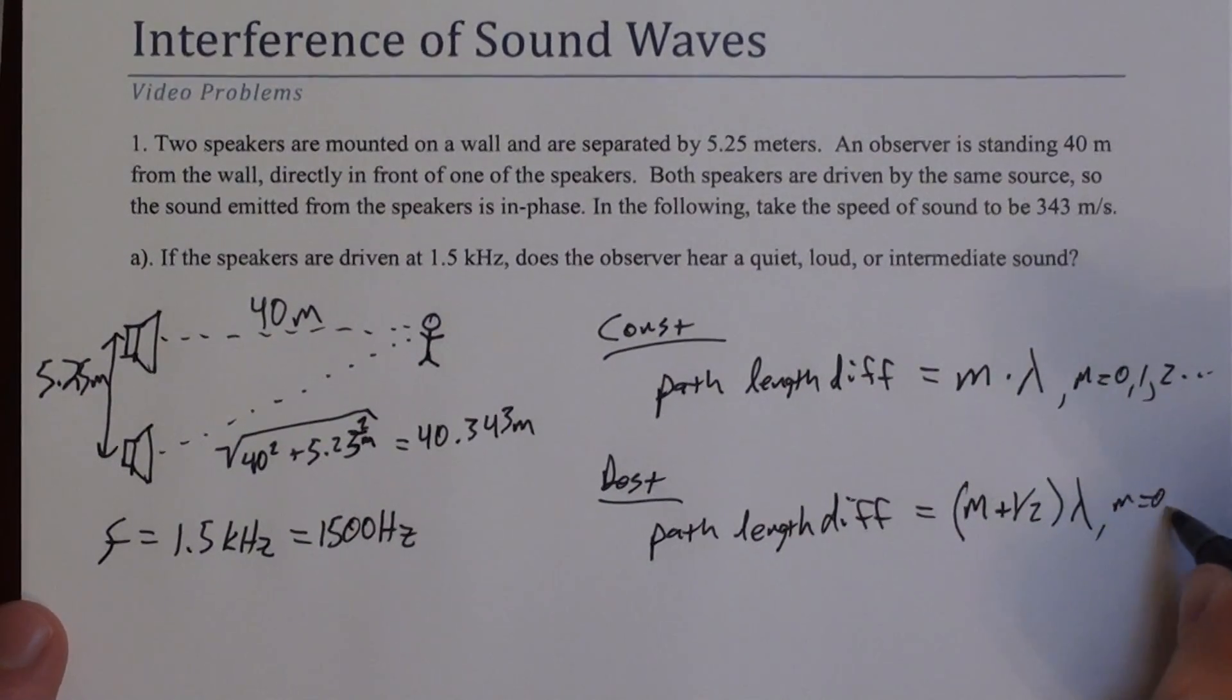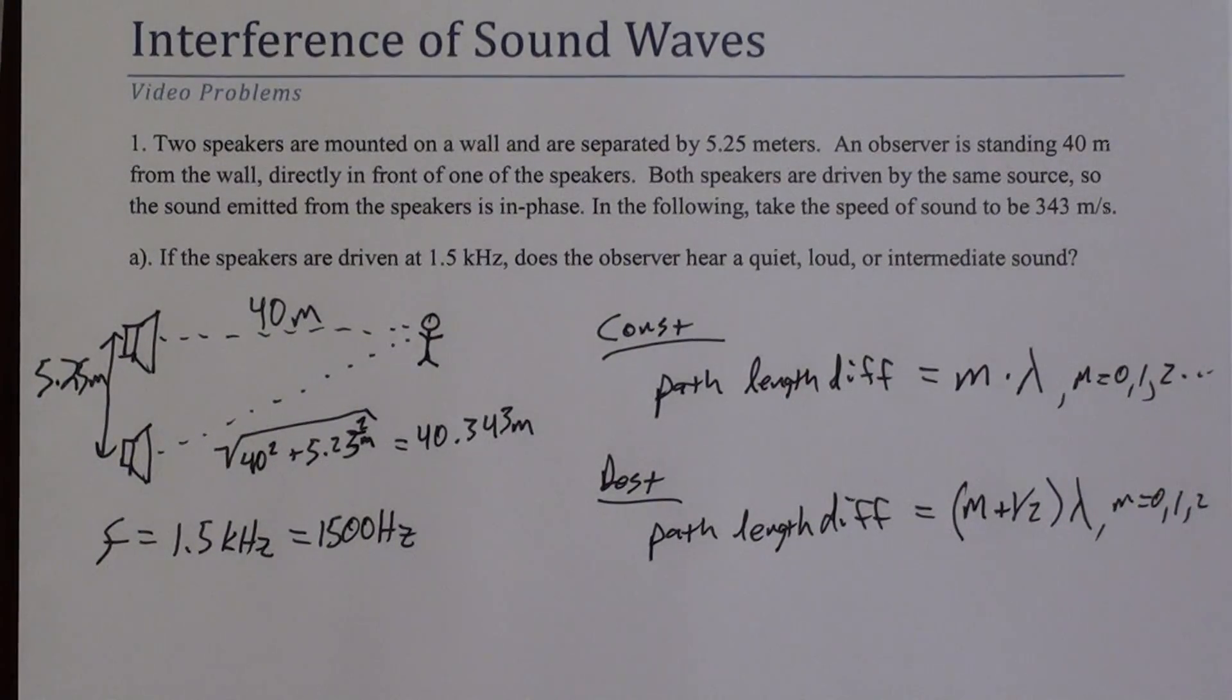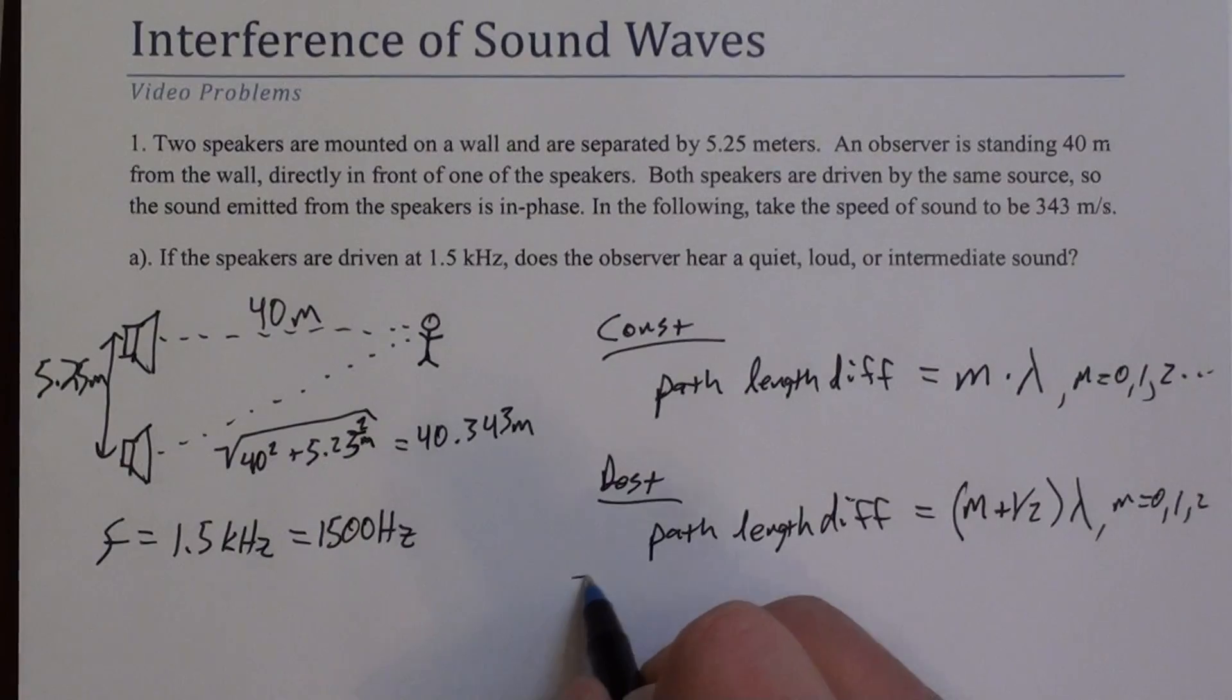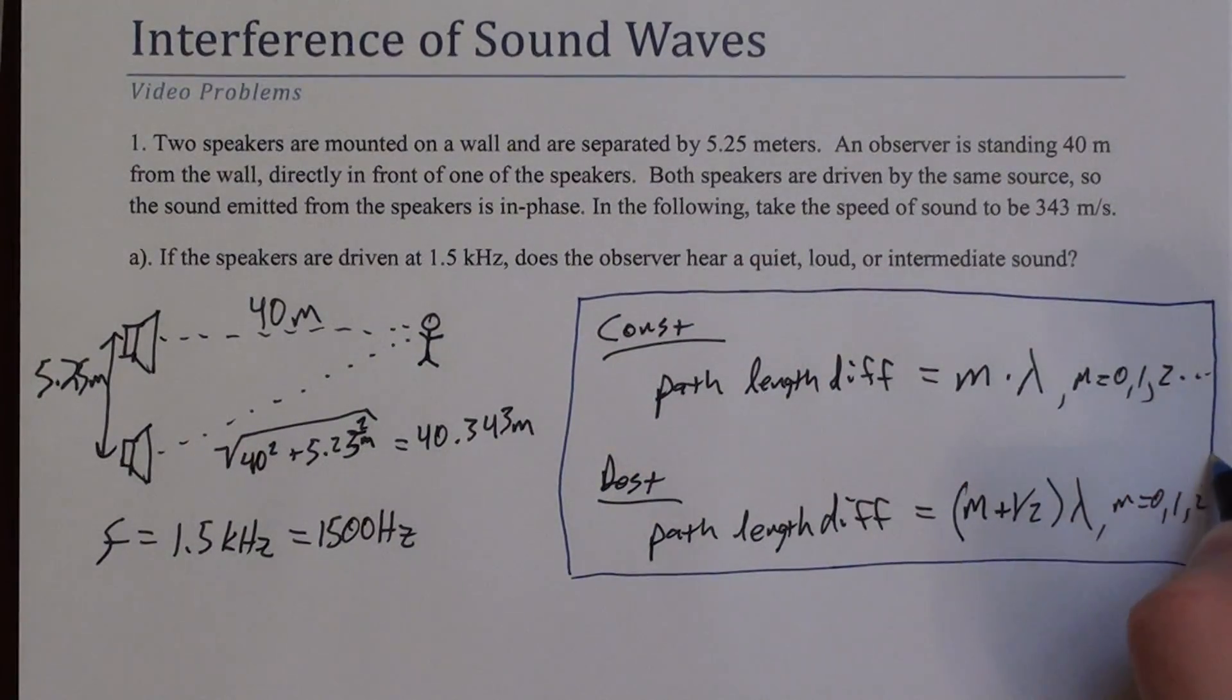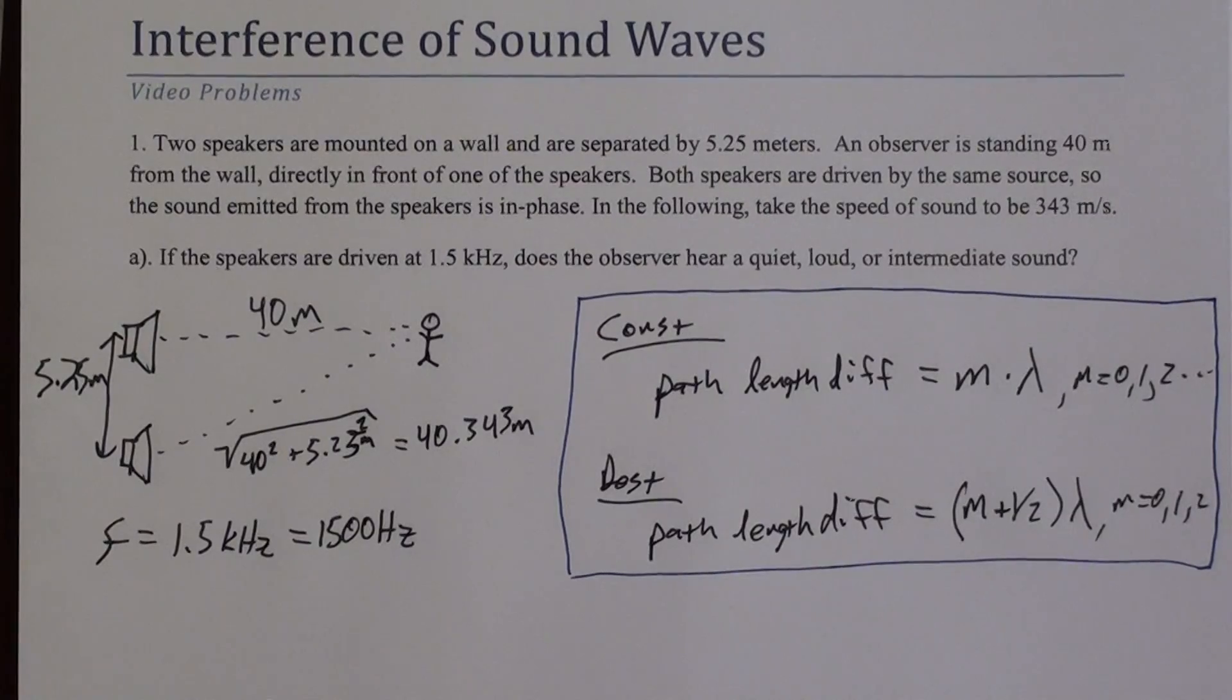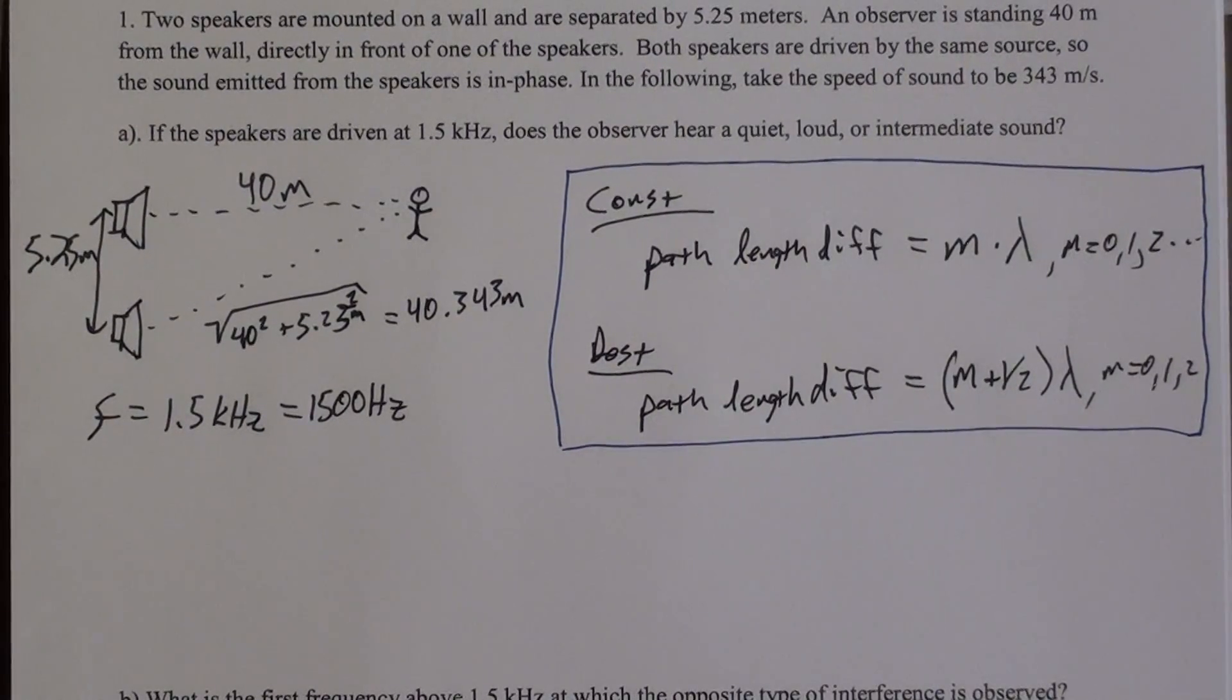And for that, the path length difference is an integer plus a half of wavelengths. So what that shows up is m plus one half lambda. For the same, m could be 0, 1, 2, or so on. So these are the two equations that we should be checking.